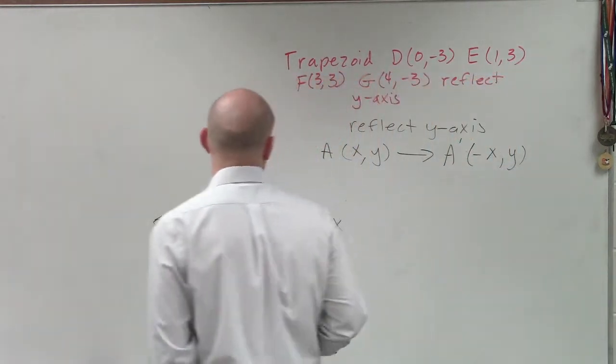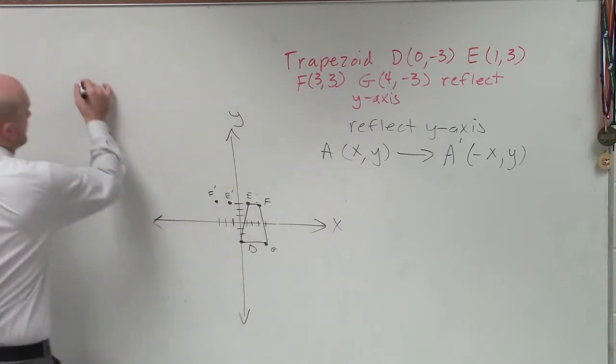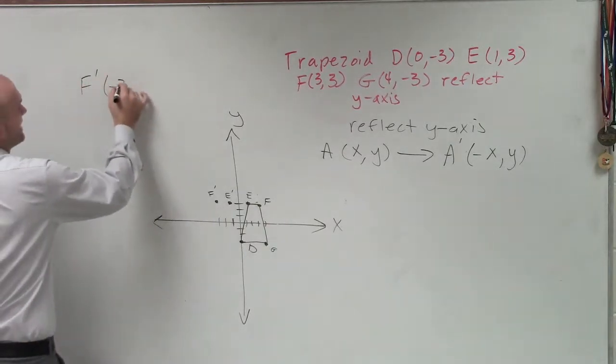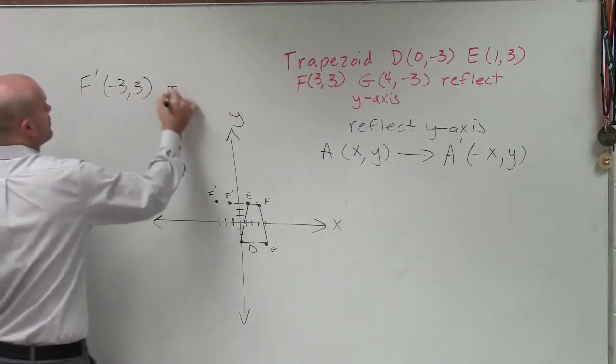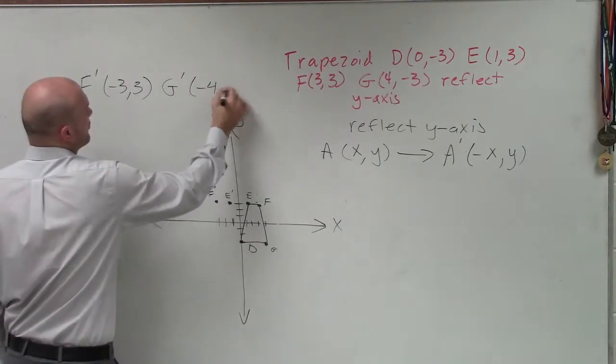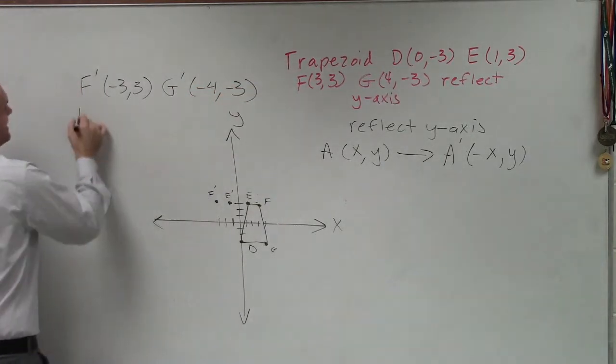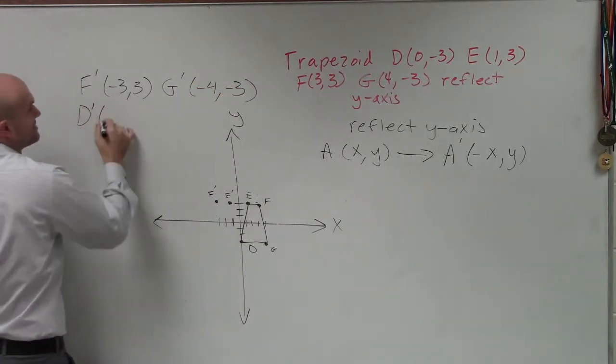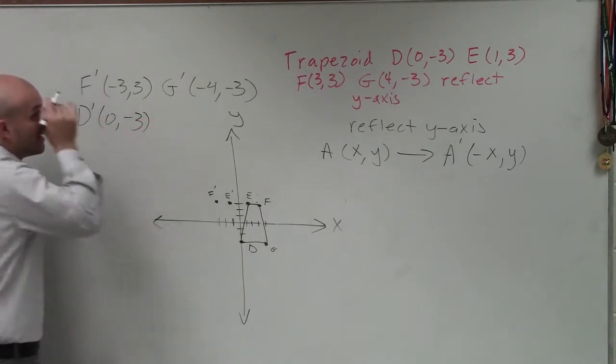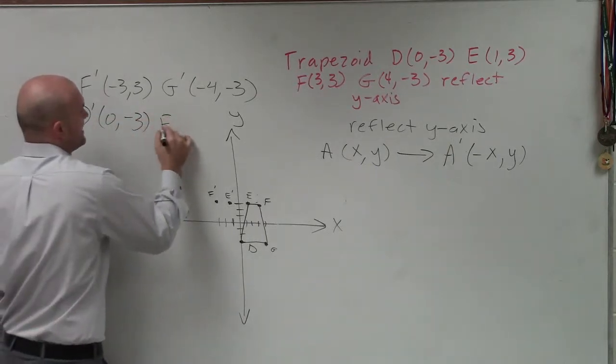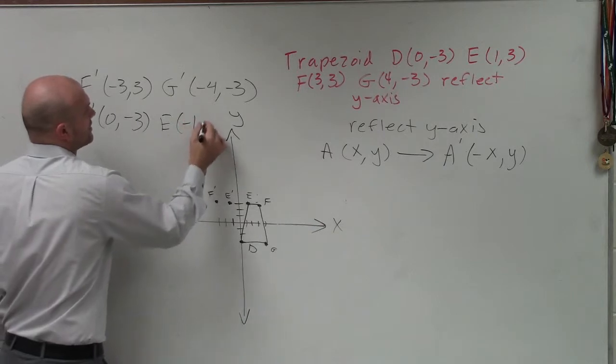All right? So therefore, you guys can see that my new points, F prime is going to be negative 3 comma 3. G prime is going to be negative 4 negative 3. D prime is going to be 0 negative 3, because 0 cannot be positive negative. And E is going to be negative 1 comma 3.